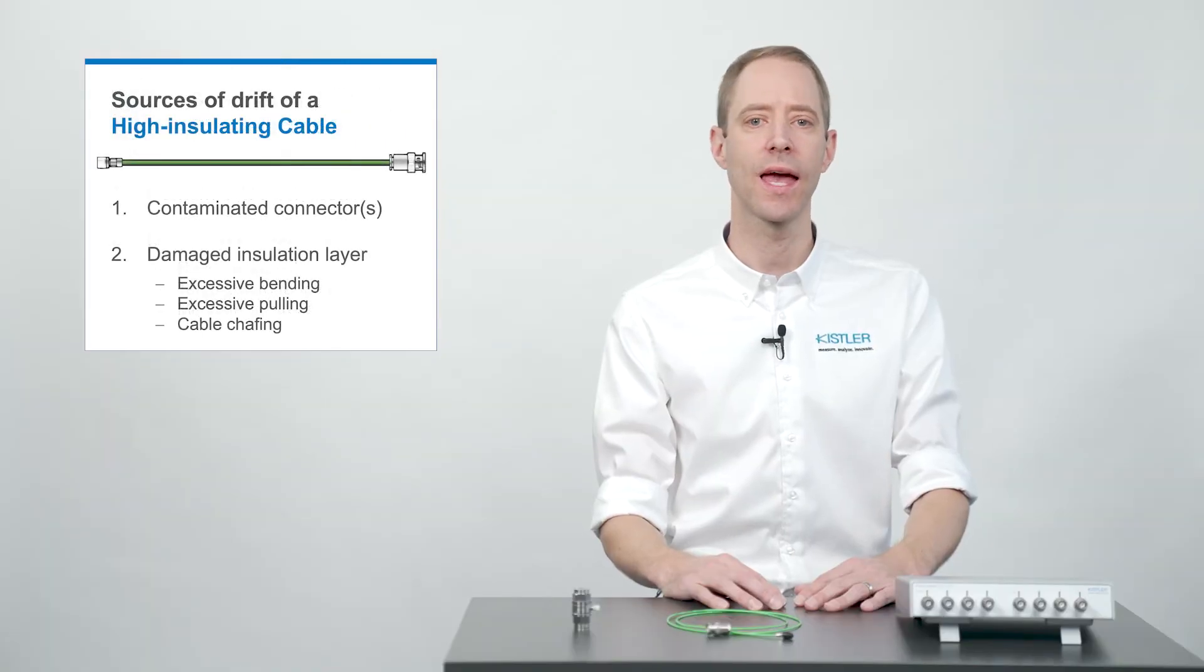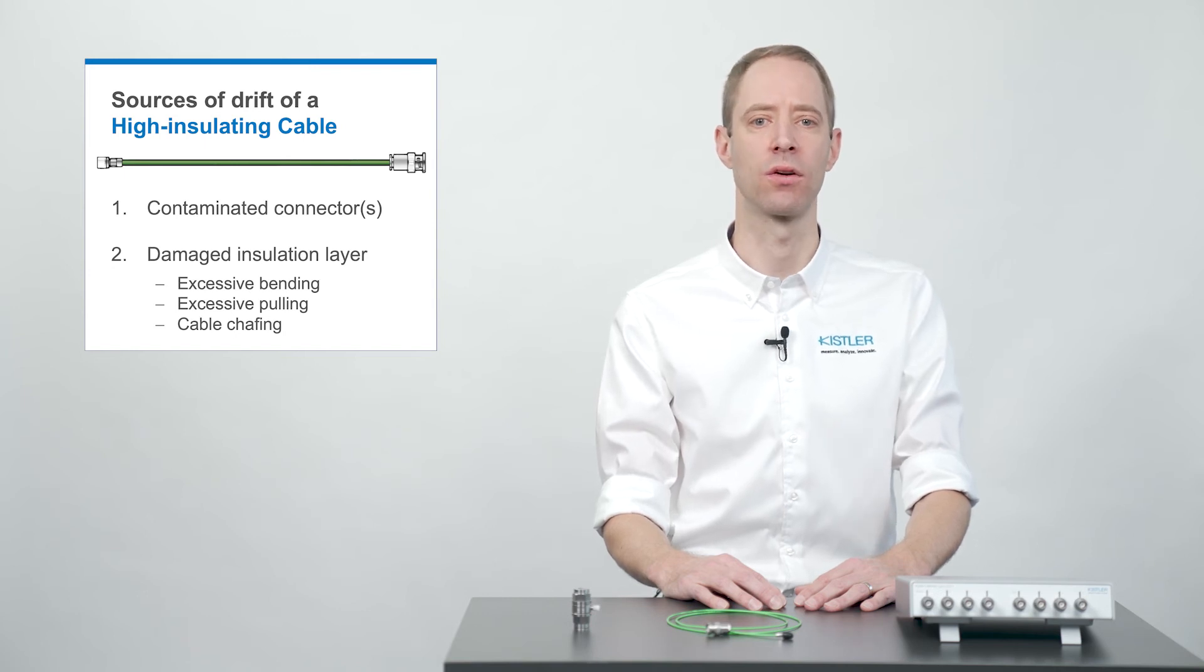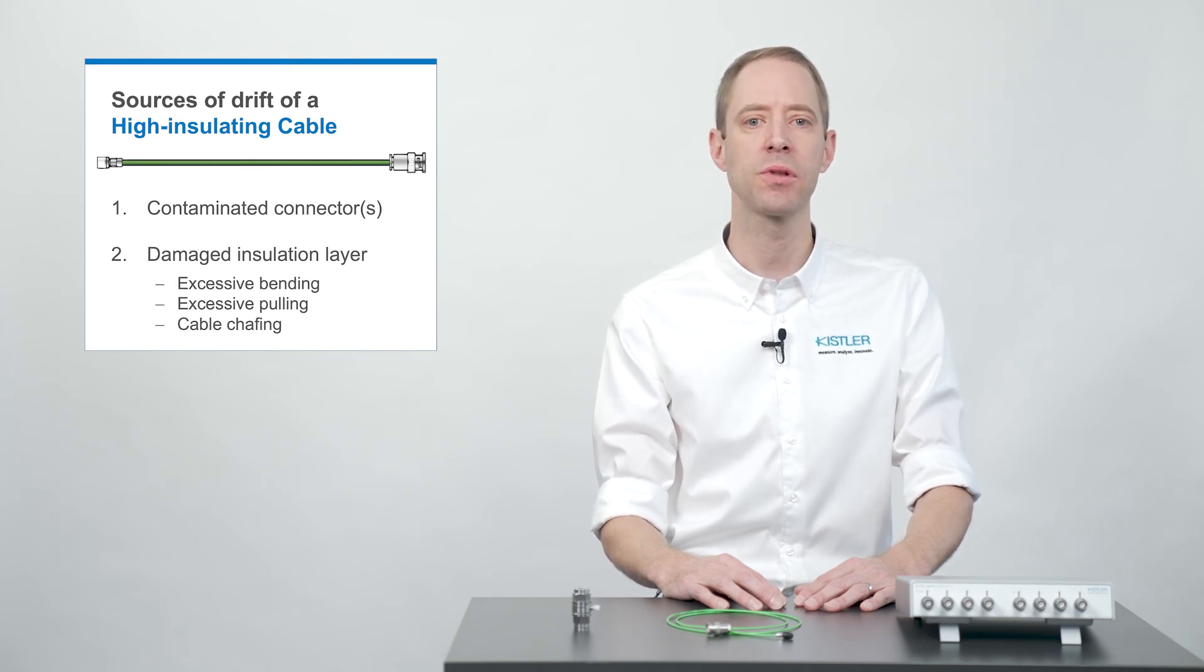For the high insulating cable, obviously, connector contamination also leads to drift. A second possible source for drift is a damaged insulation layer. Often, the damage is caused due to excessive bending of the cable or pulling on the cable too strongly, which can lead to tearing off on the connector side. In rare cases, cable shaving of a moving cable on a sharp edge can damage the insulation layer.